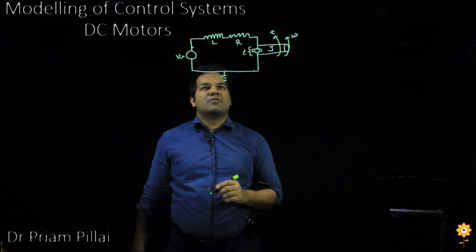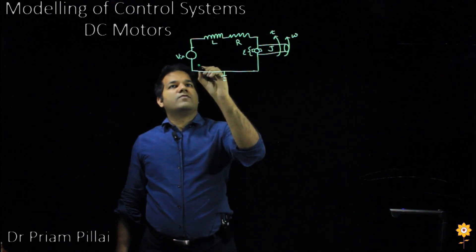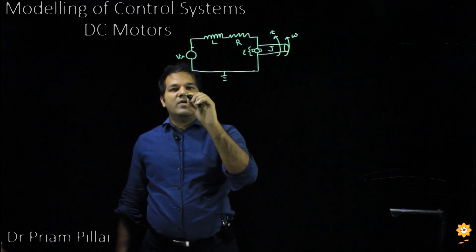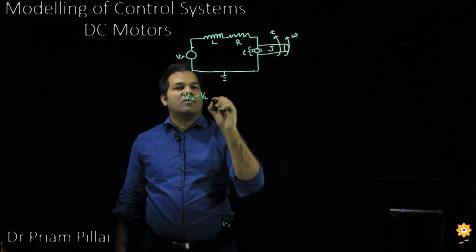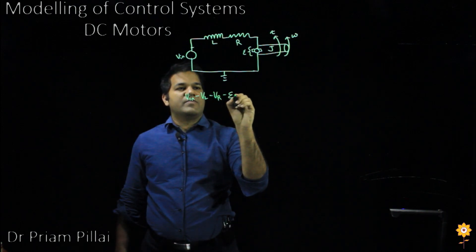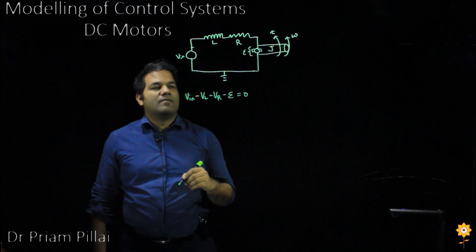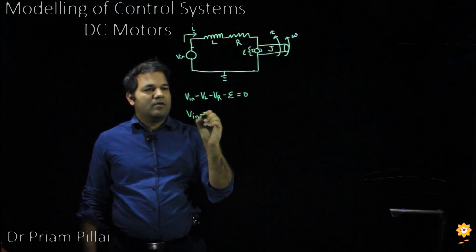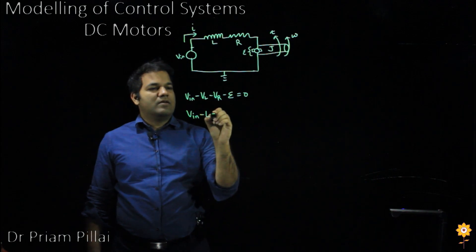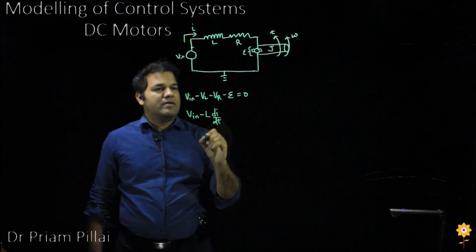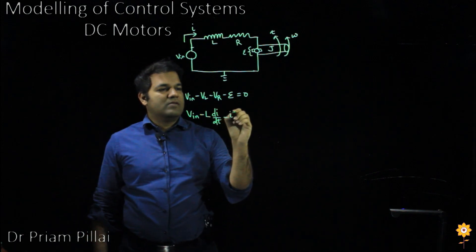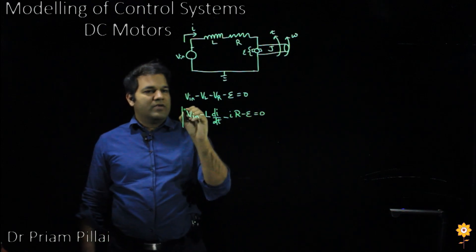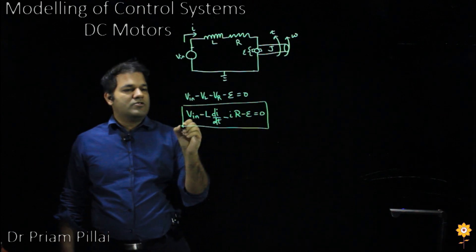How would we write down the equations of the electrical part? We would apply Kirchhoff's voltage law along this loop. And the voltage law would just say that V_in minus V_L minus V_R minus epsilon equals 0. Let us assume there is a current I that flows through this. So V_in minus L di/dt minus IR minus epsilon equals 0. This is the first equation that we will use to generate our system of equations.